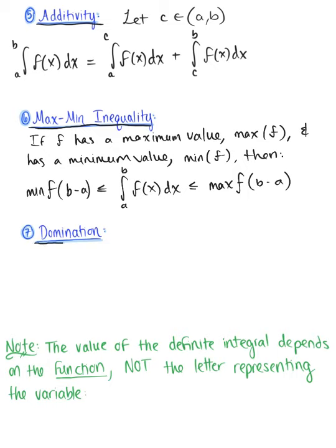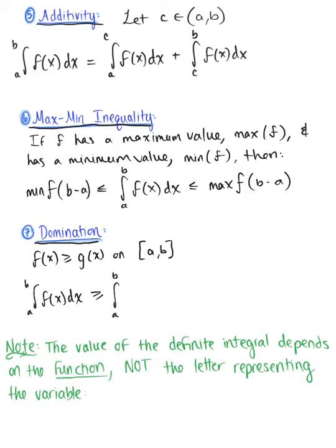Last but not least, we have the domination property. Suppose that a function f of x is greater than or equal to a function g of x on a closed interval from a to b. The domination property tells us that the definite integral from a to b of f of x dx is going to be greater than or equal to the definite integral from a to b of g of x dx. This makes logical sense: if f is never less than g on the closed interval a to b, then the definite integral of f is also never less than the definite integral of g on that same closed interval.